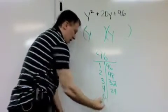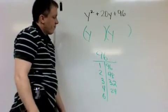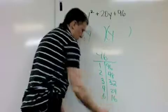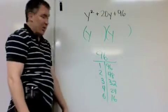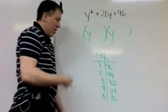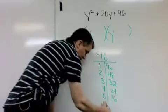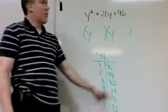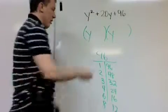5 doesn't go into it. 6 times 16. Nope. That adds to 22. But we're getting closer, it looks like. 7 doesn't go into it. 8 and 12. 8 plus 12 is 20. So that's all I put in there.